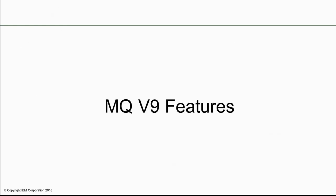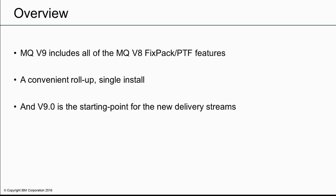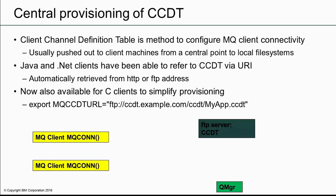The version 9 scope could be considered another set of functions, much like we've released in the fix packs, but it provides a clean baseline for future development and includes all of the features released after version 8 originally shipped. As we go through these charts, you'll also see references to RFEs raised by customers which have been satisfied by this release. One of the elements of our vision for MQ is to continue to simplify configuration and deployment, and being able to centrally manage client tables is one piece of that.